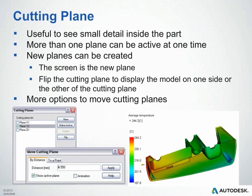Cutting planes are a commonly used feature, very useful for seeing small detail inside the part. More than one cutting plane can be activated at one time. New planes can be created in addition to the default XY, YZ, and ZX planes — when you create a new plane, your screen orientation acts as the cutting plane, so orient your model and press the button to create it. You also have options to flip and move cutting planes.